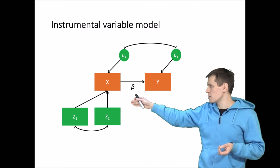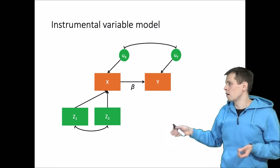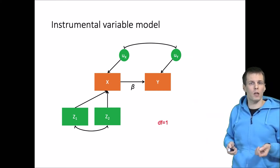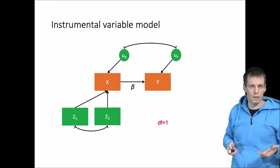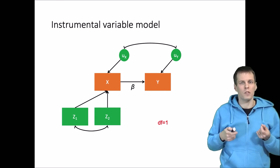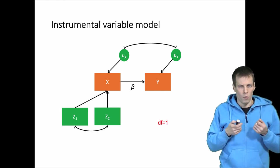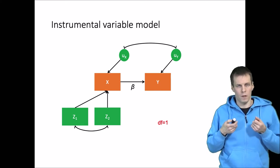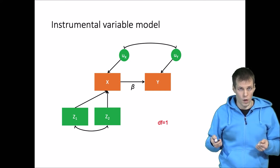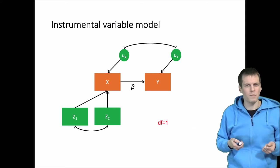So we have two instruments Z1 and Z2, they are freely correlated. They explain x and they are assumed to be uncorrelated with UY. We have one degree of freedom in this model and whenever we test the model when we have degrees of freedom, we need to understand where those degrees of freedom come from and what is the constraint being tested. What is the meaning of that constraint and then how does testing the constraint inform our research? Let's take a look at where this one degree of freedom comes from. So what is being tested?